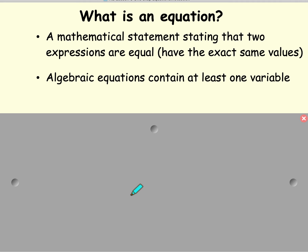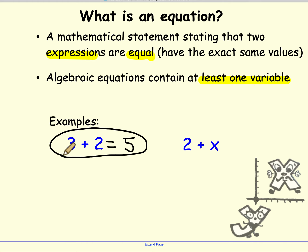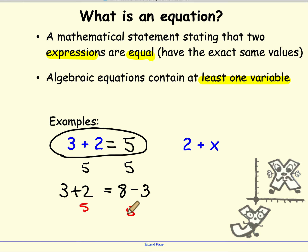An equation is a mathematical statement stating that two expressions are equal — they have the exact same values. Algebraic equations contain at least one variable. So here are some examples. 3 plus 2 and 2 plus x are expressions. If we want to make 3 plus 2 into an equation, we have to make it equal to something else. So 3 plus 2 equals 5 — it's an equation because the left side is equal to 5, and the right side is also equal to 5. We could also write 3 plus 2 equals 8 minus 3, because both sides equal 5.